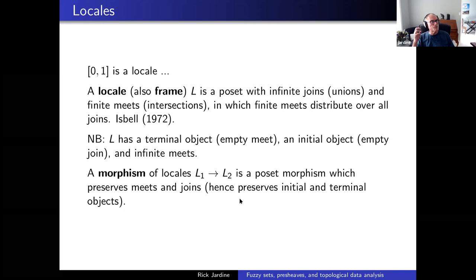The target interval of numbers between zero and one is what's called a locale. This is a common object from topos theory, first formalized by Isbell in 1972, and it's become a staple of topos theory in applications of homotopy theory. A locale is a type of poset that's well-behaved: it has infinite joins or unions, finite meets, and all finite meets distribute over all joins.